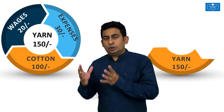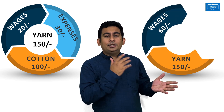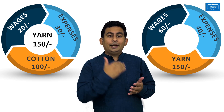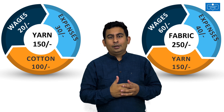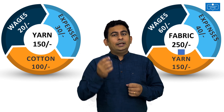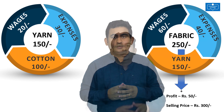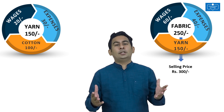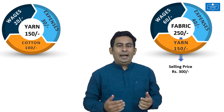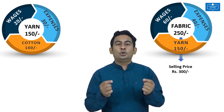The yarn, which is the output of process 1, is then transferred to process 2 where the manufacturer spends 60 rupees towards wages and another 40 rupees for expenses to convert the yarn into cloth. The total cost of cloth is now 250 rupees. On top of this, he adds another 50 rupees as profit and he sells it in the market for 300 rupees. Thanks to process costing, we now know the cost at the end of each process: 150 rupees at the end of process 1, an additional 100 rupees in process 2, making the total cost of manufacturing cloth 250 rupees.